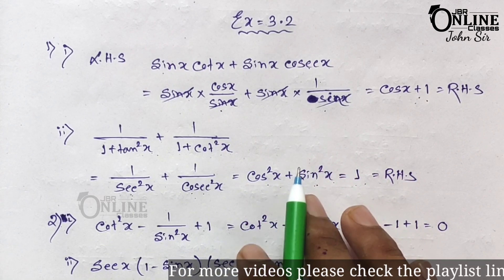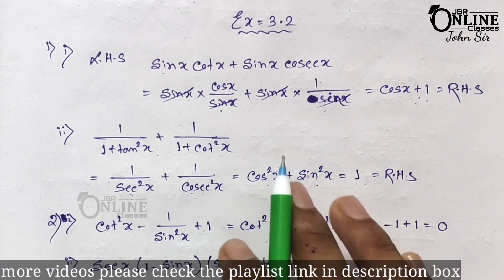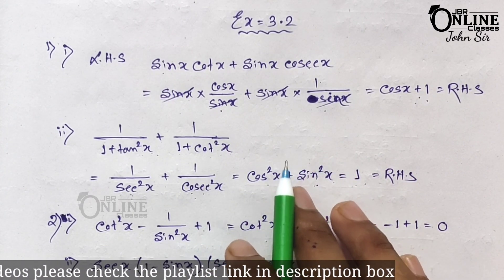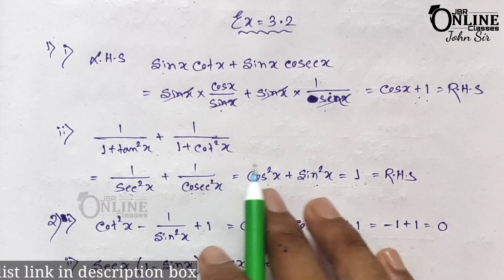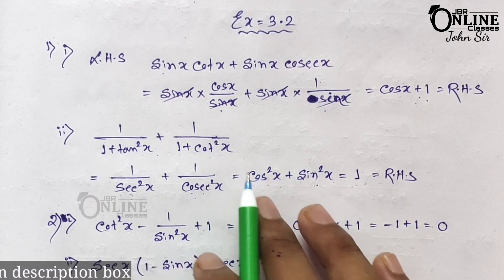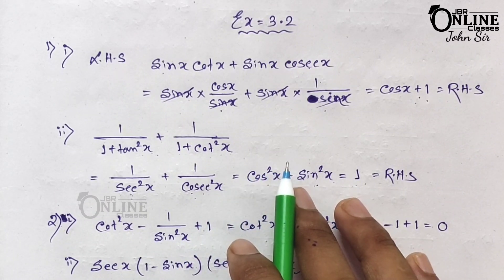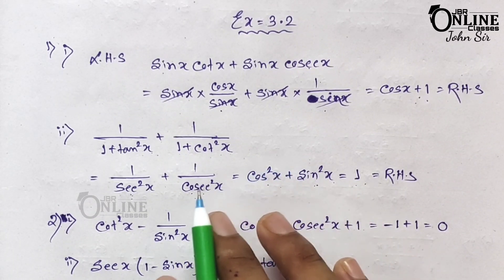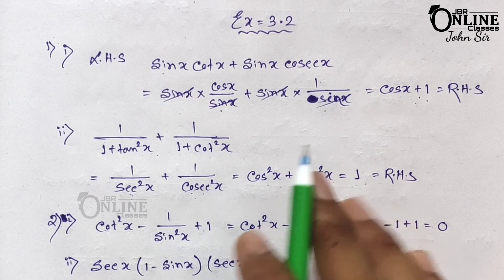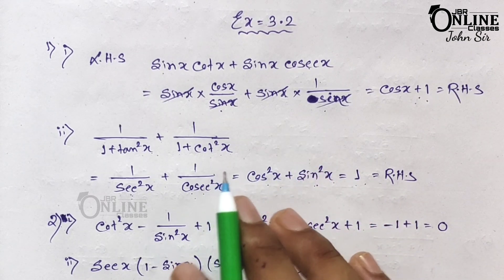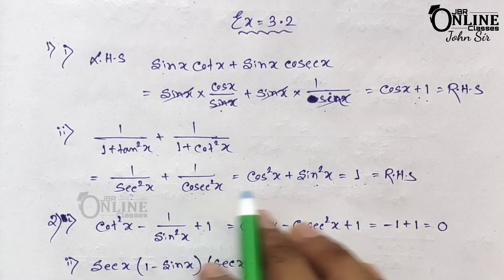To solve these problems you first have to learn all the basic formulas of trigonometry: the reciprocal of sine, the reciprocal of cosine, the reciprocal of tan, as well as sin²θ + cos²θ = 1, sec²θ − tan²θ = 1, and cosec²θ − cot²θ = 1.